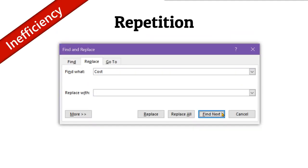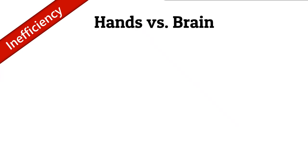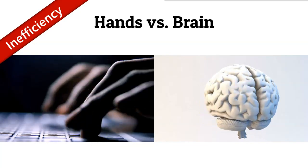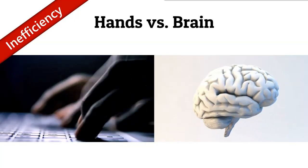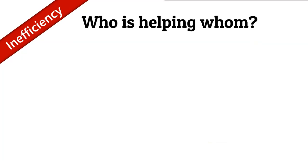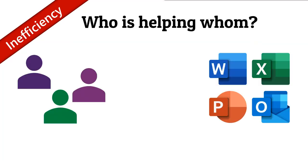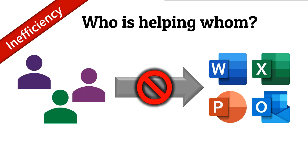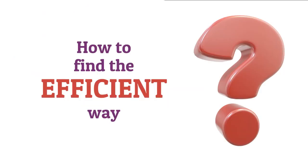I'll give you three simple methods of detecting your own inefficiency, not just in the context of OneNote but practically every software. First, if you're doing something repetitively — for example, doing Find Next repeatedly to find a spot in Word — that's inefficient; there has to be a better way. Second, if there is an imbalance between hands and brain — hands are busy but brain is idle — the process must be inefficient. Third, at no point should you be helping the software; it's their job to help you.